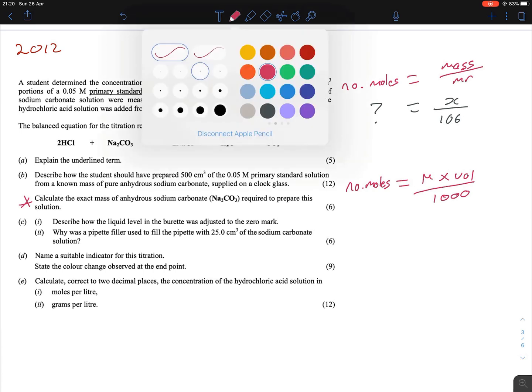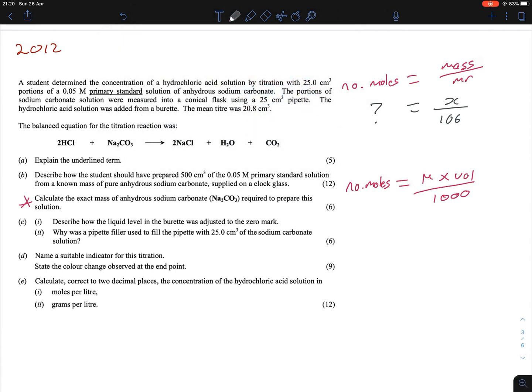So we actually have all the information here. We said the molarity was 0.05, and we have the volume being 500, and it goes over 1000. And when you do that, you're going to get your number of moles to equal 0.025.